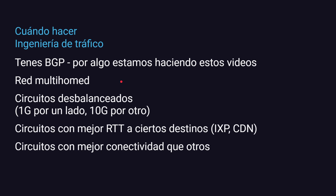¿Cuándo tenemos que hacer ingeniería de tráfico? Por supuesto, cuando tenemos BGP. Si estás multi-home, tenés más de una conexión BGP hacia afuera, puede ser en uno o más sitios. Si tenés circuitos desbalanceados — podés tener uno de 1 GB, uno de 10 y uno de 100 — aunque uno tenga menor capacidad, puede tener mejor latencia hacia algunos destinos, como si está conectado a un exchange, un IXP, o un servicio SDN. Pueden tener mejor latencia, muy buen ancho de banda, o un ancho de banda comprometido con ciertos peers.